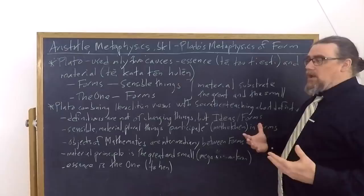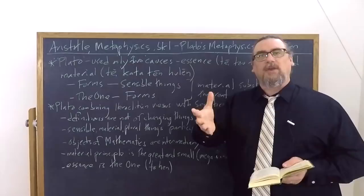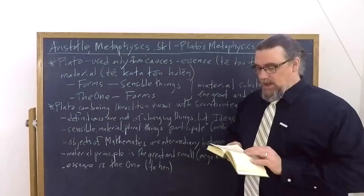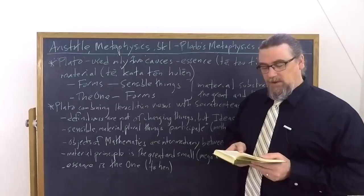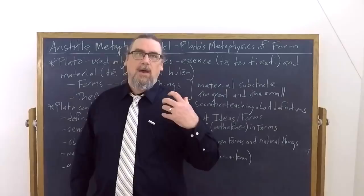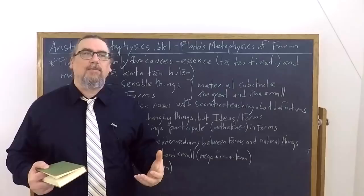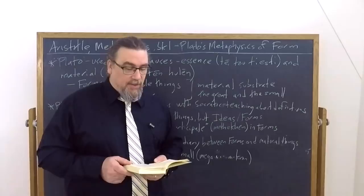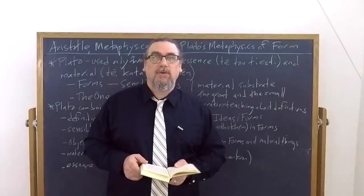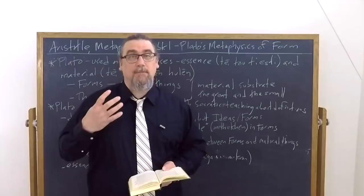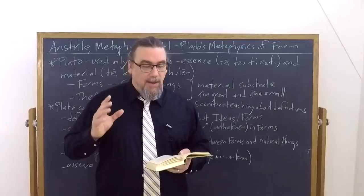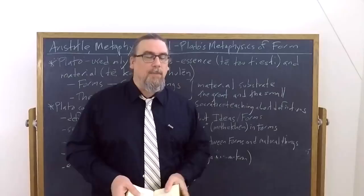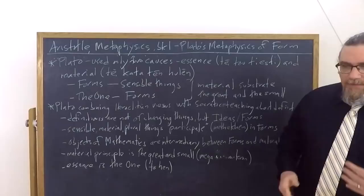Aristotle goes on and talks about the sensible, material, plural things, the things that we're used to encountering in our ordinary existence, as having a relation to the form that he calls participation, methexin. And this comes from meta echen, and it's a technical term that Plato is taking over and coining. Aristotle says this is quite similar to what the Pythagoreans were doing in saying that everything existed by imitation, mimesis, of numbers. Plato is changing the name to participation, methexin, of the forms themselves. And then he says, as to what this participation or imitation may be, they left this an open question. And that's actually going to be a sticking point of Aristotle's view on Platonic philosophy and metaphysics in general.